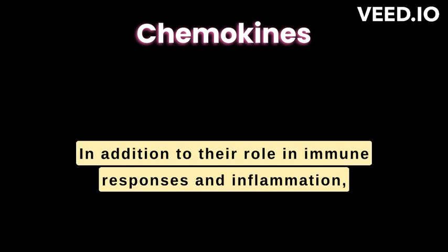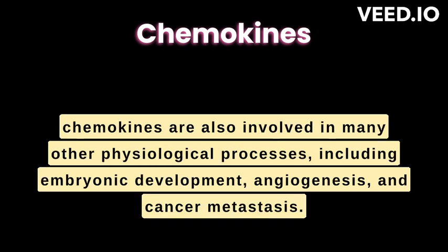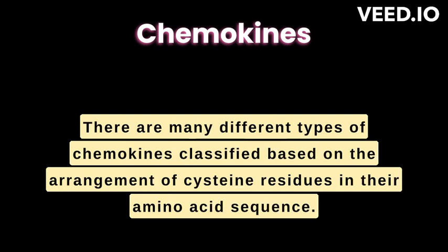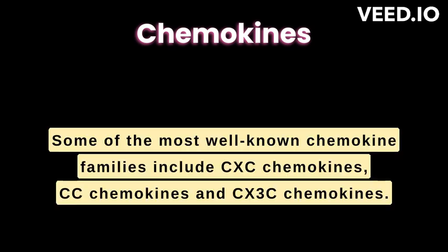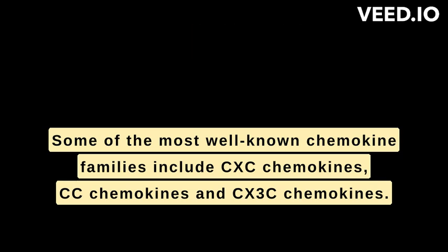In addition to their role in immune responses and inflammation, chemokines are also involved in many other physiological processes, including embryonic development, angiogenesis, and cancer metastasis. There are many different types of chemokines, classified based on the arrangement of cysteine residues in their amino acid sequence. Some of the most well-known chemokine families include CXC chemokines, CC chemokines, and CX3C chemokines.